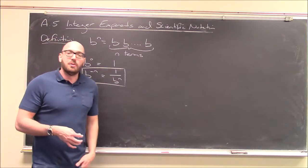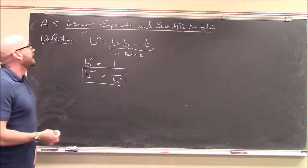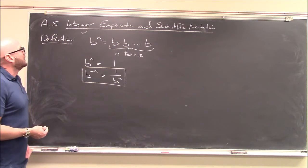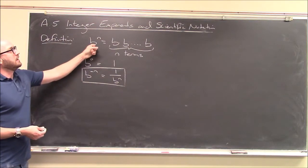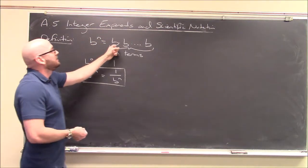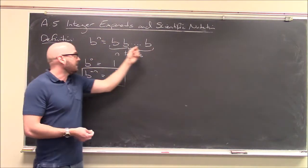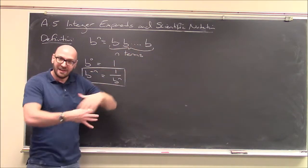Section A5 expands what we already know about exponents in the following sense. We've already talked about what exponents mean. If I take a number and I raise it to the power n, so b to the n, that just means multiply b by itself n times. So b times b times b times b, n times.